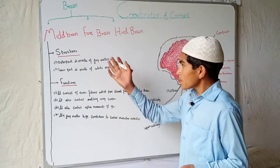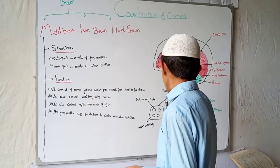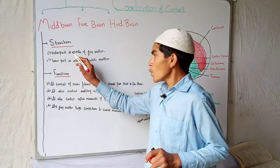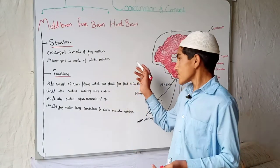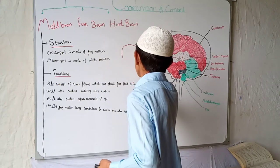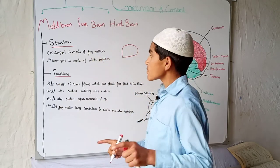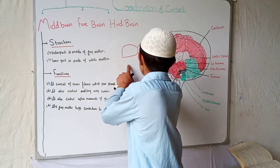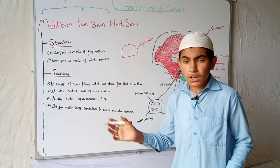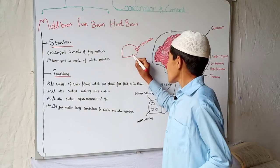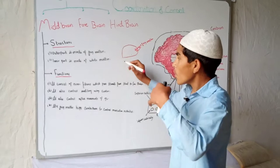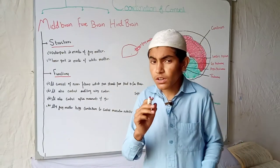Now let's talk about the last part of the brain — the midbrain. It consists of some nuclei cells. Structurally, the outer part is made of gray matter, which contains the cell bodies of neurons. The inner part is white matter because it consists of the axons of the neurons.